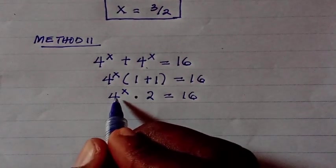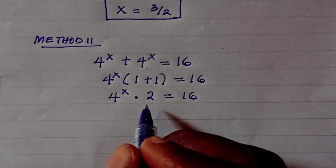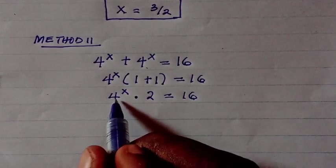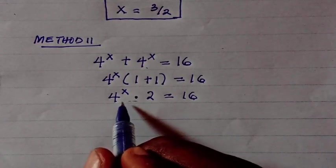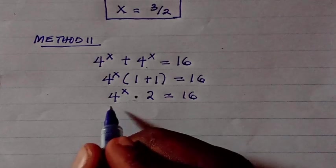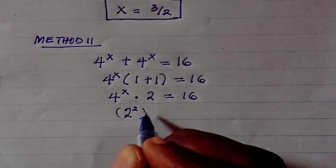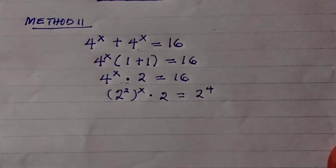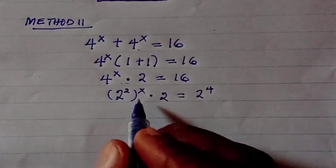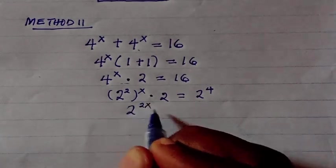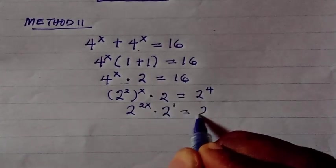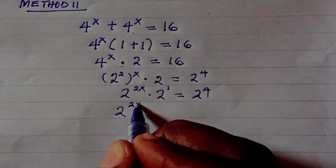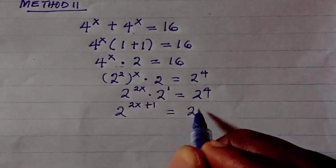We have base 4 and base 2 here, so we express everything as base 2 and apply the product power law of indices. Doing that, we have 2 to the power of 2 times 2 to the power of 1 equals 2 to the power of 4. Expanding gives 2 to the power of 2x, times 2 to the power of 1, equals 2 to the power of 4. Taking the same base, we get 2 to the power of 2x plus 1 equals 2 to the power of 4.